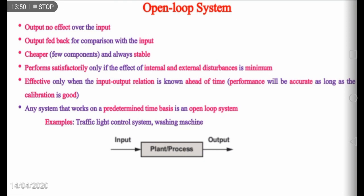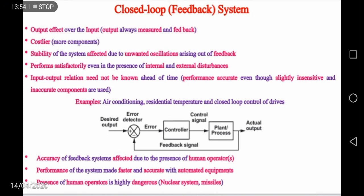We will now discuss the closed loop system or feedback system. In contrast to an open loop system, the output is always measured and fed back for comparison with the input; therefore, the output has an effect over the input. The system is costlier because it involves more components than the open loop system, since feedback is an inherent property of the closed loop system. Because of the feedback, there is a possibility that the system may become unstable due to unwanted oscillations. But the closed loop system performs satisfactorily even in the presence of internal and external disturbances. It is not necessary that the system has to perform on a predetermined time basis, and the input-output relation need not be known in advance. The performance will be accurate even though slightly insensitive and inaccurate components are used.